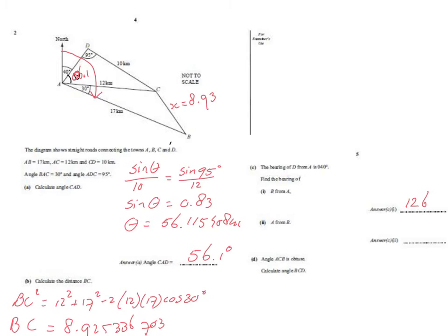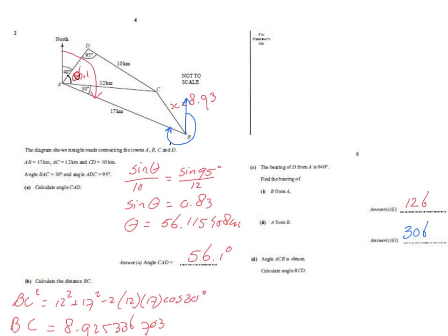Next: the bearing of A from B. From the north at B in a clockwise direction, we're looking at an angle that is clearly more than 270°. I'll do 360 minus a part of the angle. Since the north lines are parallel, that part and the bearing of B from A add up to 180°. So that part is 180 minus 126 = 54°, and the bearing of A from B is 360 minus 54 = 306°.